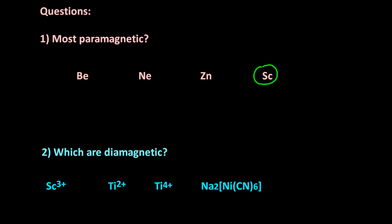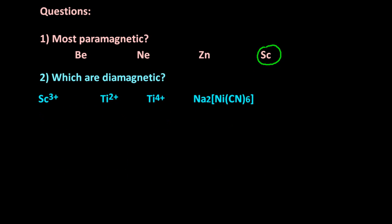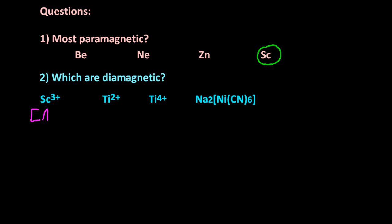Which are diamagnetic? Diamagnetic, every electron must be paired in the orbitals.